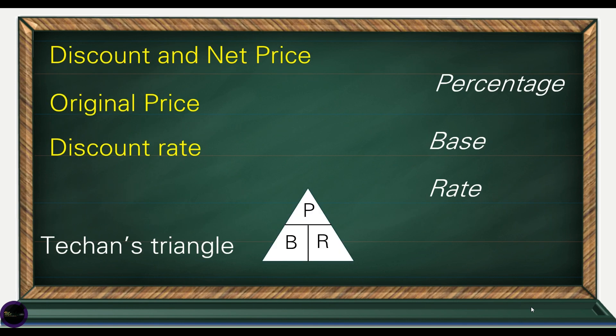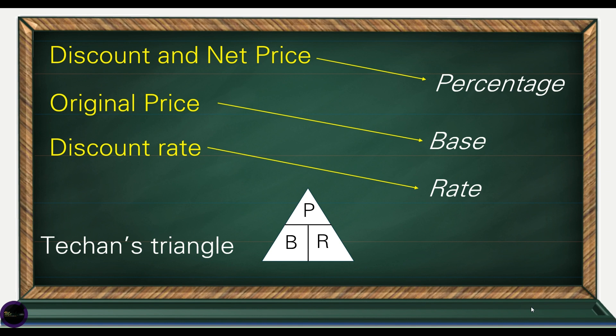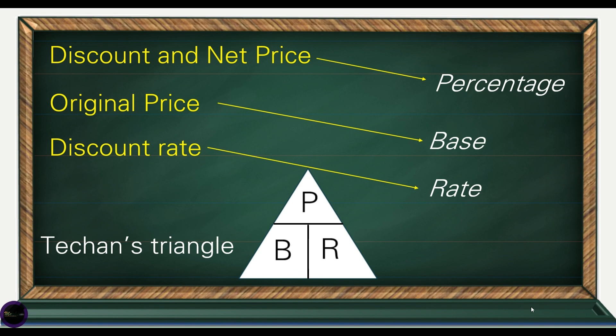We should not forget that discount and net price both represent percentage, while original price represents base. Also, discount rate represents rate. Remember the TCANS triangle — it can help you remember the three formulas for easy understanding.